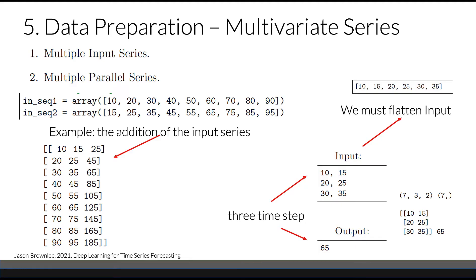When we work with multivariate series, it requires a little bit more preparation. We can have multiple input series or multiple parallel series. Let's look at the case of multiple input series. We have sequence one and sequence two, and the third component is the addition of these two input series. If we take a three time step model, our input will look like this, with three steps. Our output will be 65 as the output following these three steps.